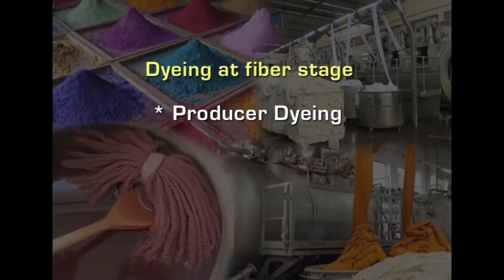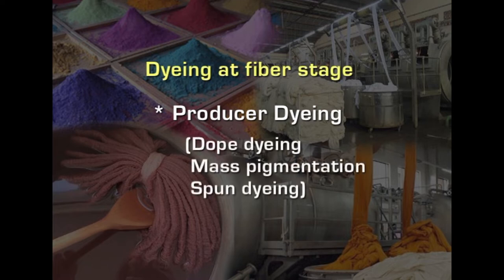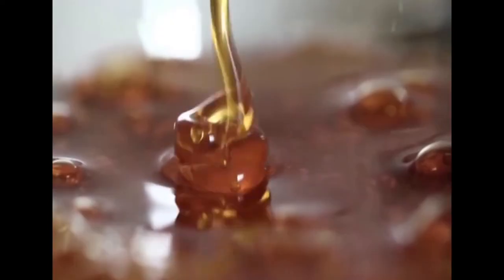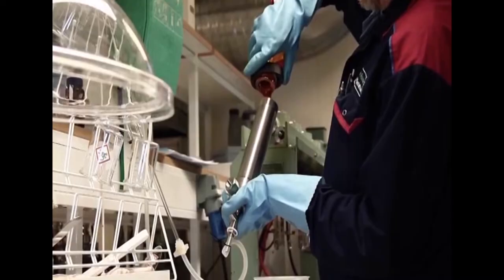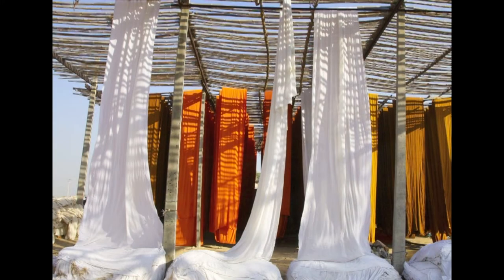At the fiber stage we call it producer dyeing, dope dyeing, mass pigmentation, or spun dyeing — each designates dyeing at the fiber stage of the textile material. For synthetic materials it is not possible to dye the material after the fabric is made because it requires different machinery with high temperature and high pressure to give depth of color. Therefore, synthetic fibers are generally colored at the stage when they are in liquid form — called dope dyeing. Here the pigment is added to the liquid solution before it is extruded through the spinneret, making the dye molecule an integral part of the fiber. Fibers and fabrics produced by this method are called producer dyed, which is why synthetic fabrics have very good color fastness properties.